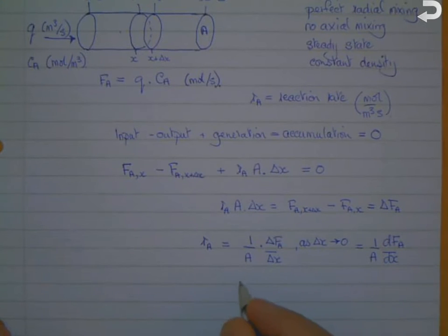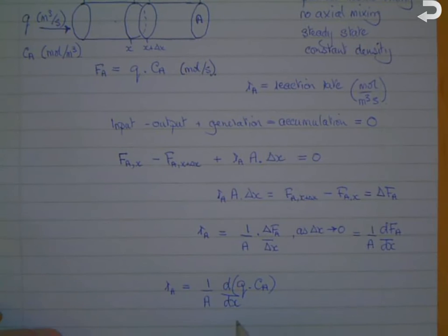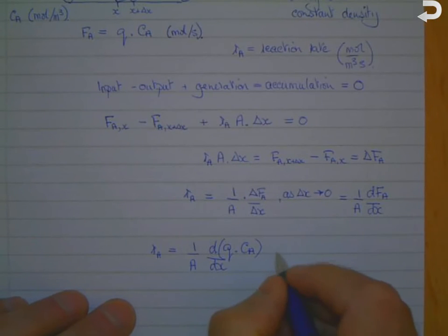We can rewrite this equation in terms of concentration. Fa we can substitute as q times Ca, so it's d by dx of q times Ca. But q is constant, so that then becomes q over A times dCa by dx.